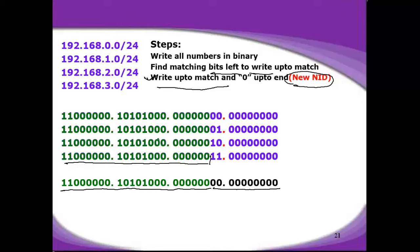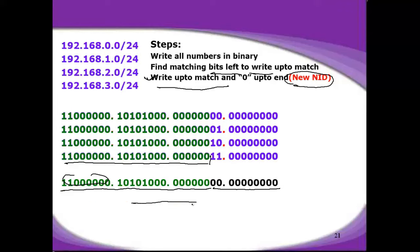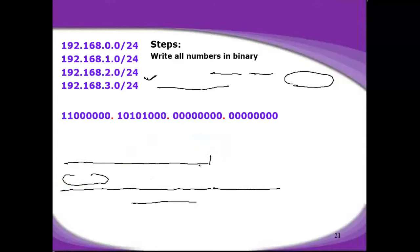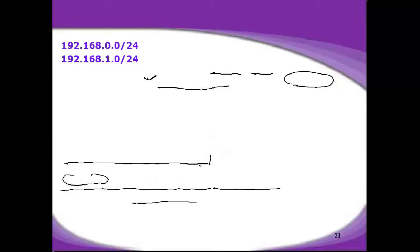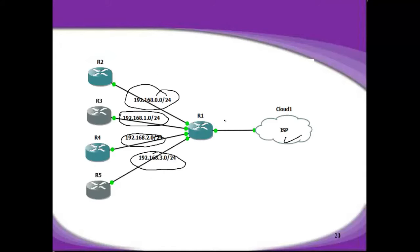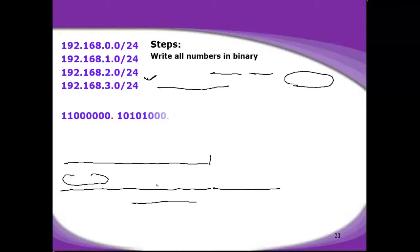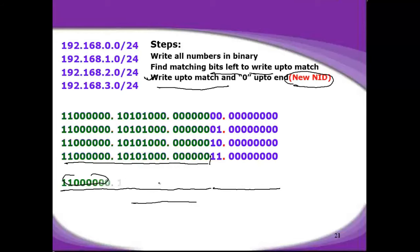The number written this way — with the matching part kept and zeros filling the rest — is going to be the new network ID. Writing the decimal equivalent gives 192.168.0.0. This is the new network ID which will be advertised from the topology, calculated using these steps.